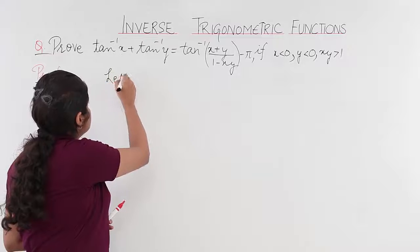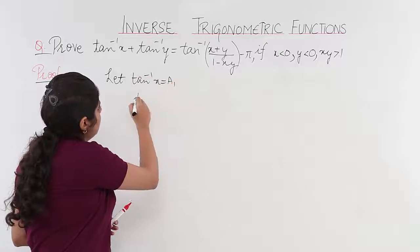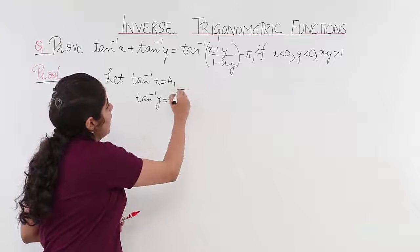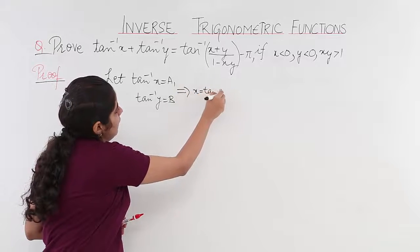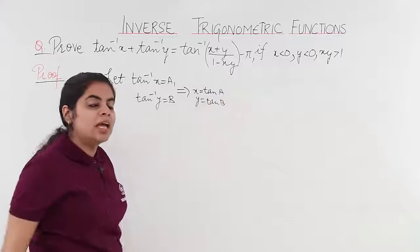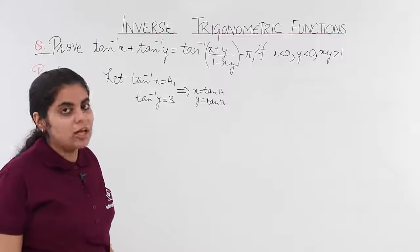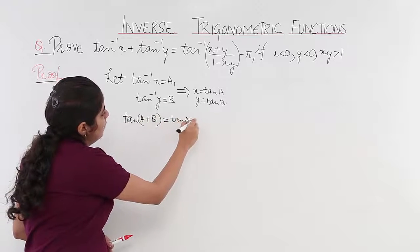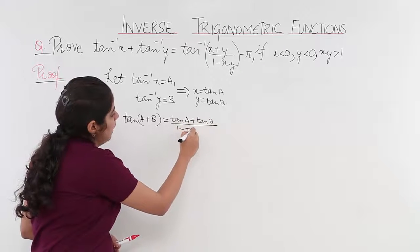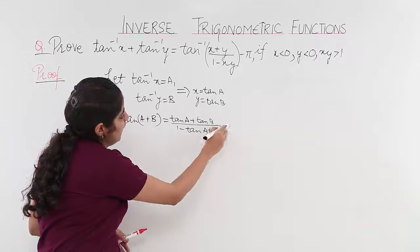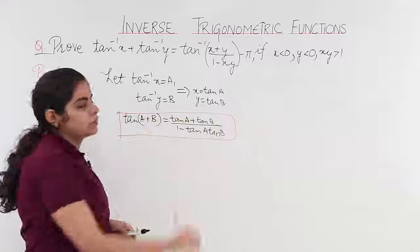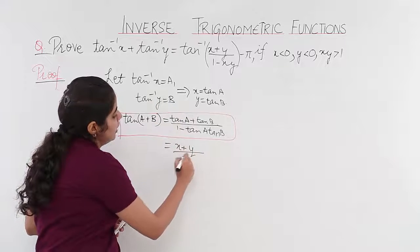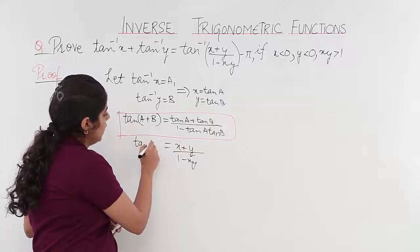Suppose, as in the previous videos, let tan⁻¹x = a and tan⁻¹y = b. If tan⁻¹x = a and tan⁻¹y = b, then x = tan a and y = tan b. We also know the formula from class 11th: tan(a + b) = (tan a + tan b) / (1 − tan a · tan b). Substituting, we get tan(a + b) = (x + y) / (1 − xy).